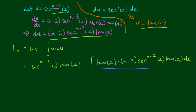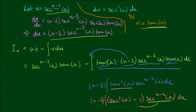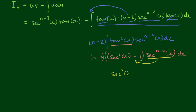Now let's deal with this integrand. The factor n minus 2 can come out to the front. Then tan x times tan x equals tan squared x, which eliminates those two terms. We copy down the rest. Now tan squared x can be written as sec squared x minus 1, using the well-known trigonometric identity. Copying down the rest, we expand sec to the n minus 2 power into the parentheses, giving sec squared x times sec to the n minus 2 power of x, minus sec to the n minus 2 power of x.